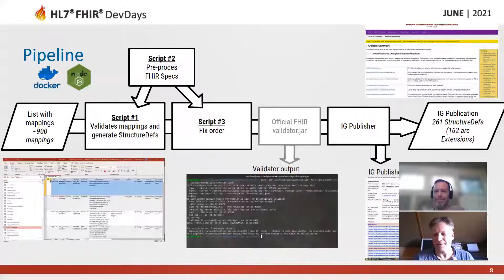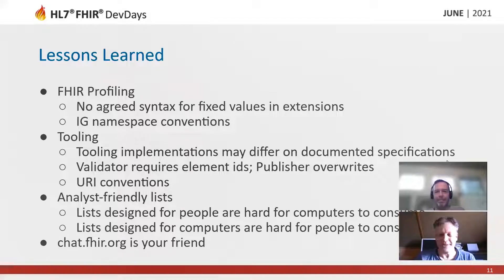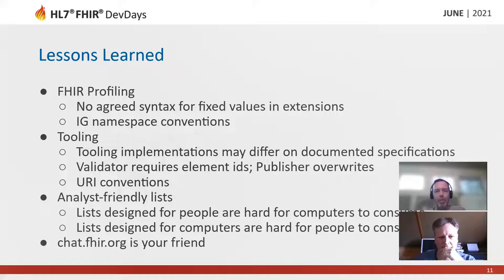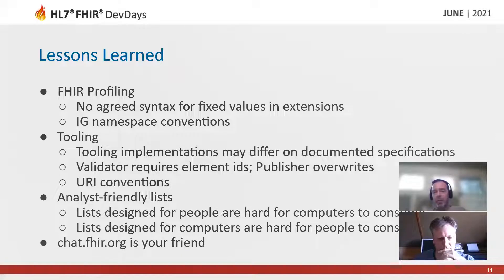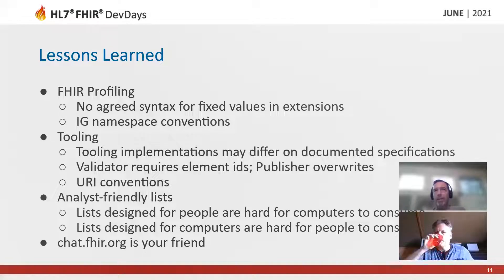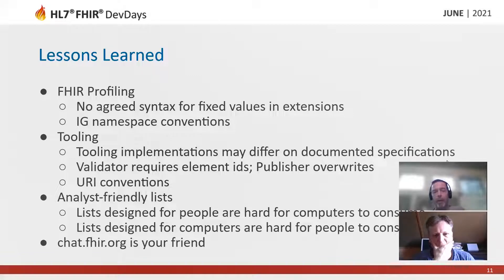Over to lessons learned. My lesson learned first: chat.fhir.org is your friend — there are a lot of good responses there and people that help you when you have questions. My main lesson was that the analyst-friendly list idea is difficult. Lists designed for people are hard for computers to consume and vice versa. With our original list, some identifiers had letters next to them — a requirement that maps to a FHIR element with constraints sometimes has to be split into two rows.